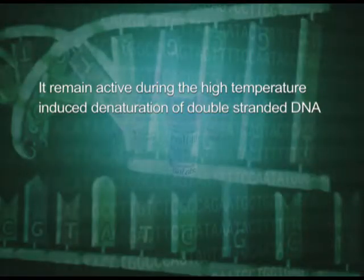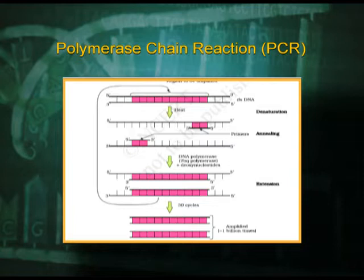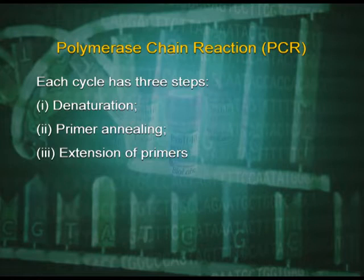Such repeated amplification is achieved by the use of a thermostable DNA polymerase isolated from a bacterium, Thermus aquaticus. It remains active during the high temperature-induced denaturation of double-stranded DNA. The amplified fragment, if desired, can be used to ligate with a vector for further cloning. The steps of the entire process are shown in this diagram. In the polymerase chain reaction, each cycle has three steps: denaturation, primer annealing, and extension of primers.